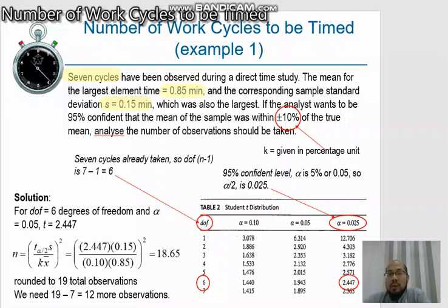If the analyst wants to be 95% confident, so this 95% is the confidence level, that the mean of the sample was within plus minus 10%, so this is acceptable error expressed as percentage at plus minus 10% of the true mean, analyze the number of observations should be taken.